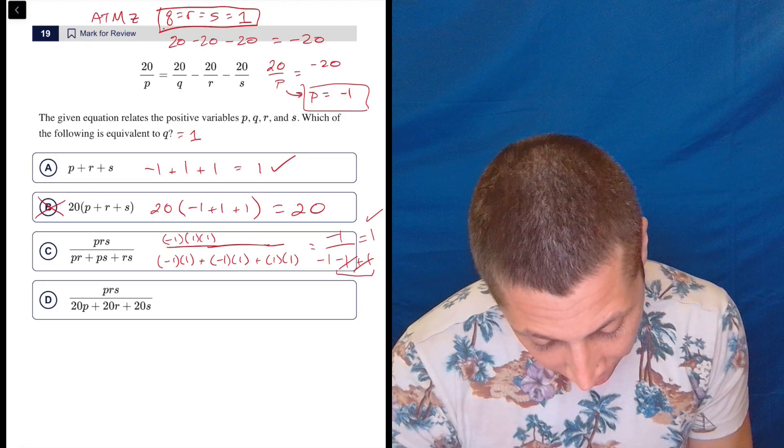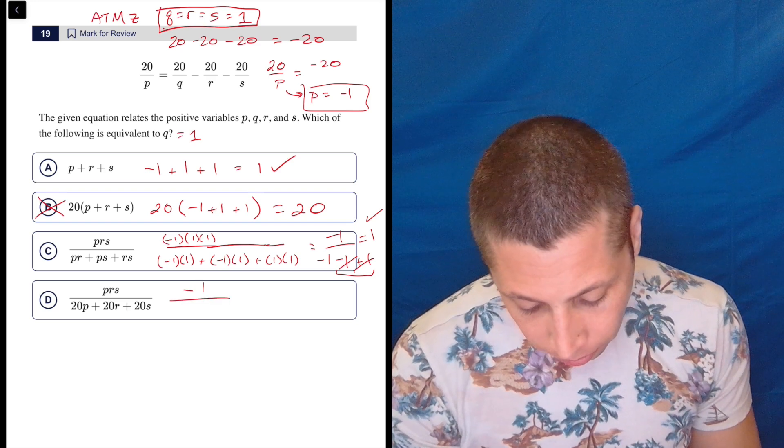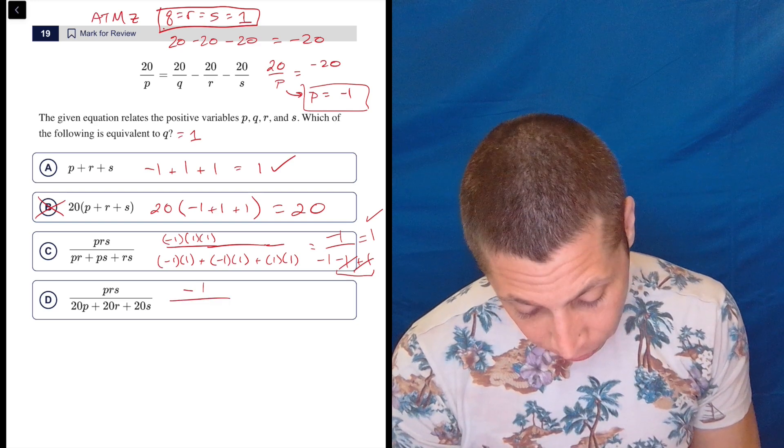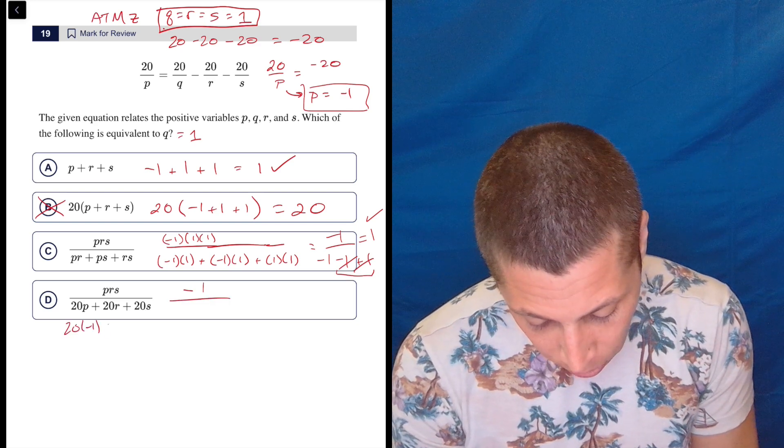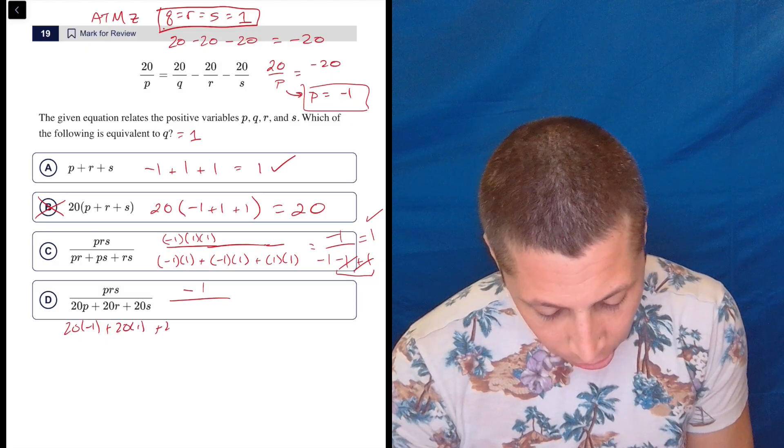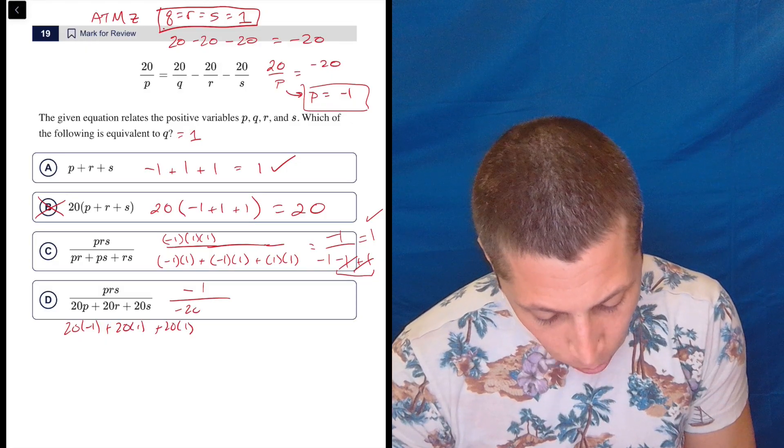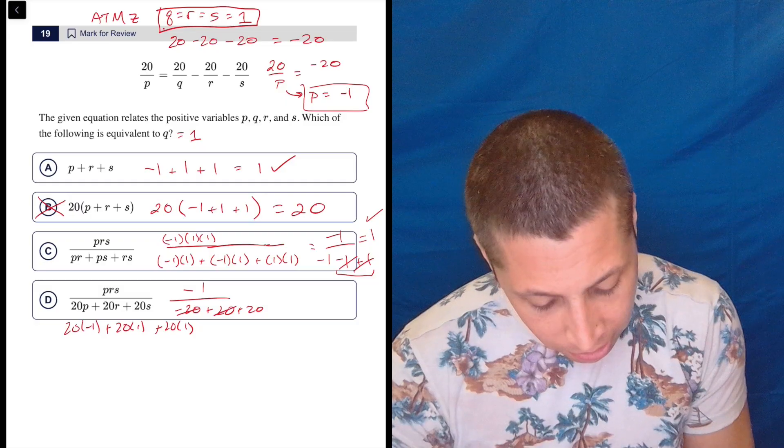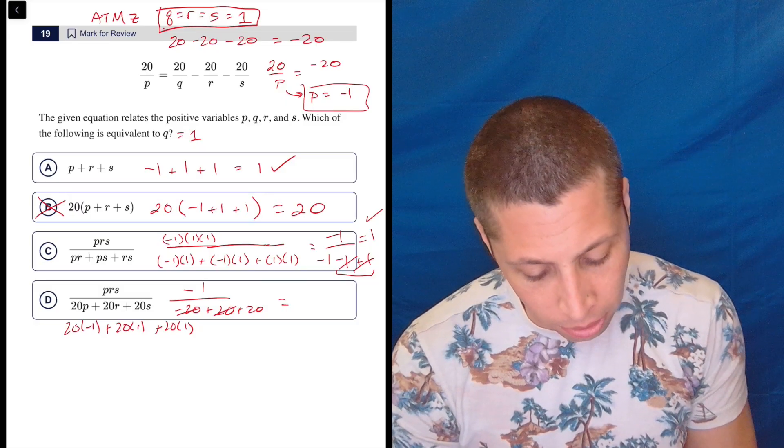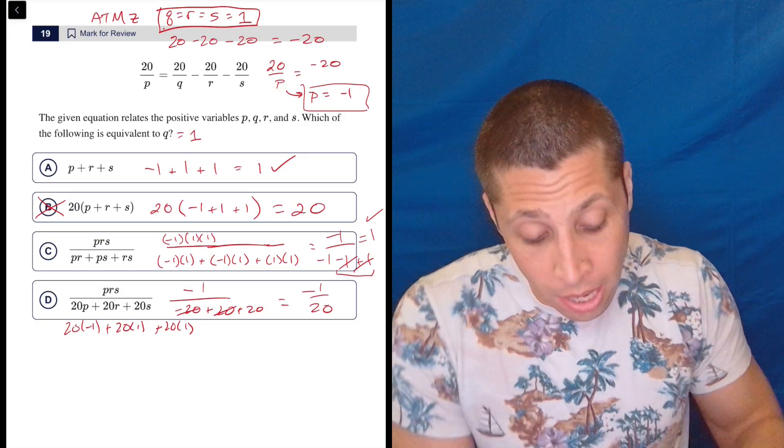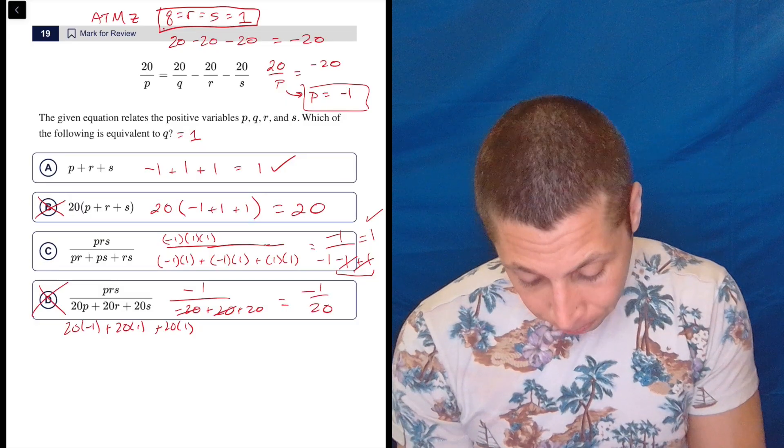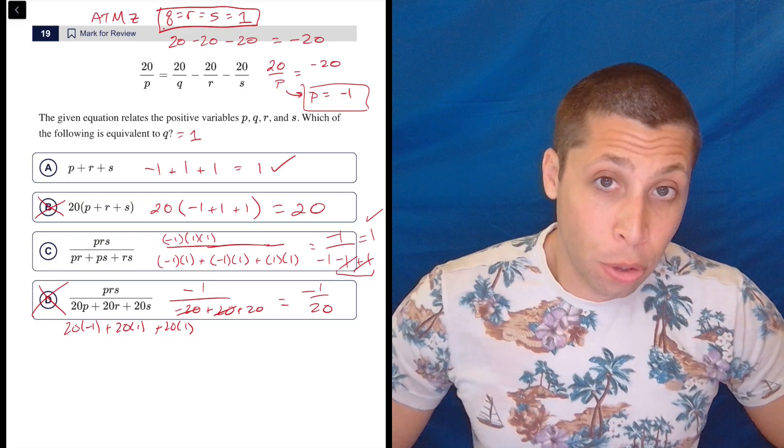Let's just see what we get. So we already know the top here is going to be negative 1, because we just did that. And then 20 times negative 1 plus 20 times 1 plus 20 times 1 is negative 20 plus 20 plus 20. So the 20s, those negatives and positive cancel. So we're left with negative 1 over 20. That's not 1. So that's gone.